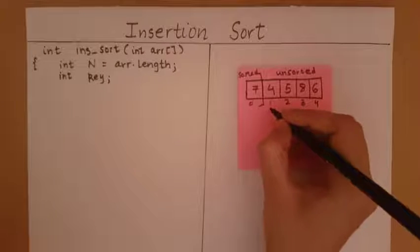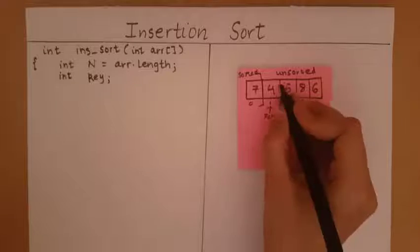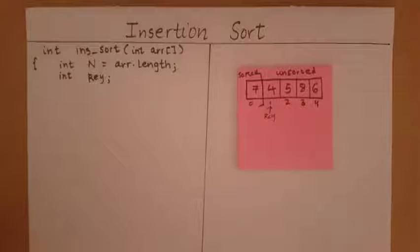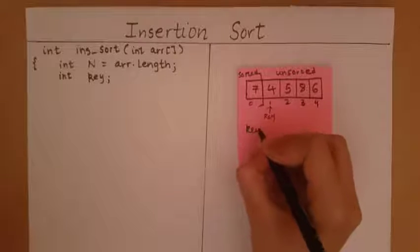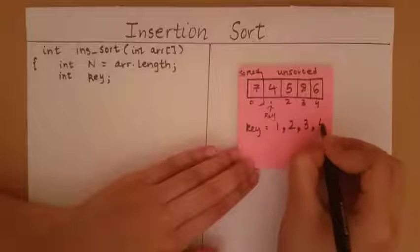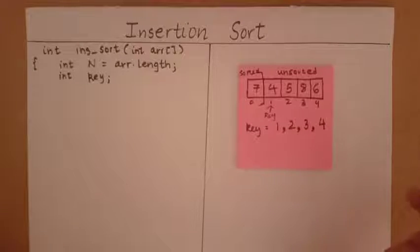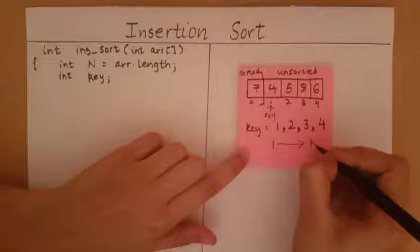So in the very beginning, the key is going to be at index 1. After the element at index 1 has been included into the sorted array, our key is going to be at index 2. Then after the element at the second index is added, our key will be at index 3, and so on. So the key is going to take values 1, then 2, then 3, then 4. The range of the key index is going to be from 1 all the way till n-1.